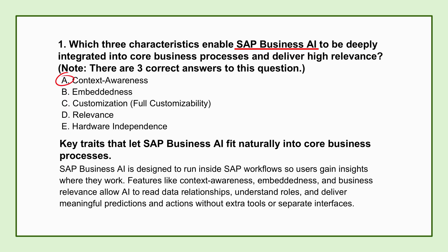So the AI isn't just giving a generic suggestion — it's tailored based on your permissions and your current task. That leads straight into the second characteristic: embeddedness. Embeddedness is really the architectural commitment from SAP. It means AI capabilities build directly into the SAP applications and workflows themselves — no need to export data or jump to another tool, no separate LLM, no bolt-on analytics. The insight or prediction just appears naturally right where you're already working.